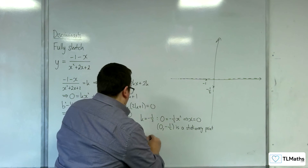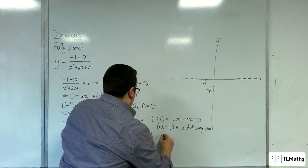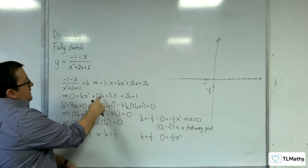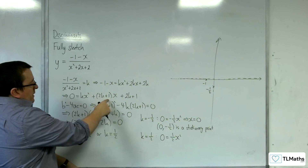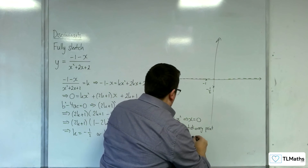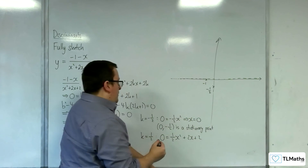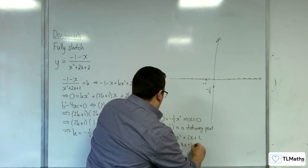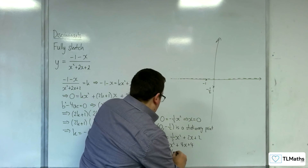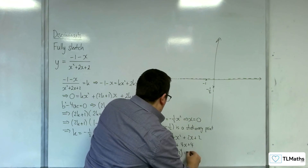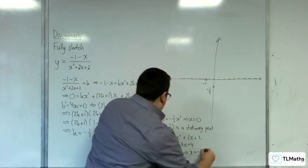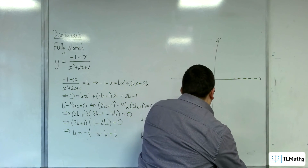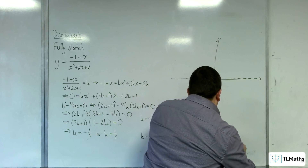When k is 1 half, substituting in gives 0 equals 1 half x squared plus 2x plus 2. Multiplying through by 2: x squared plus 4x plus 4, which is (x plus 2) all squared, so x equals negative 2. Therefore (minus 2, 1 half) is a stationary point.